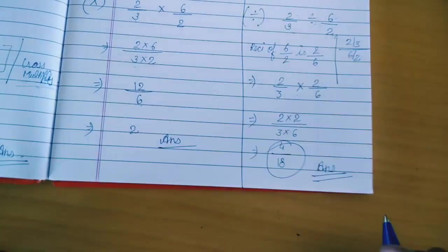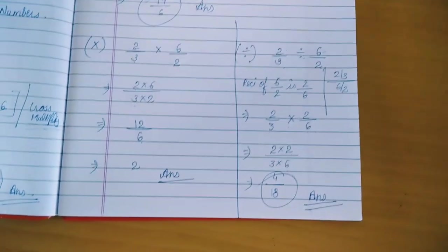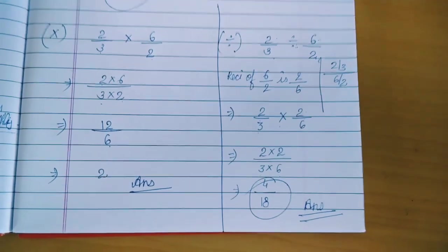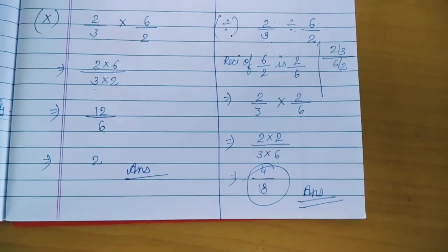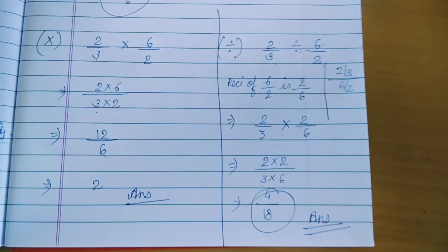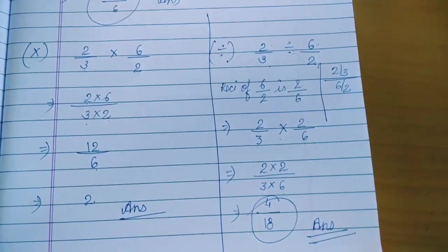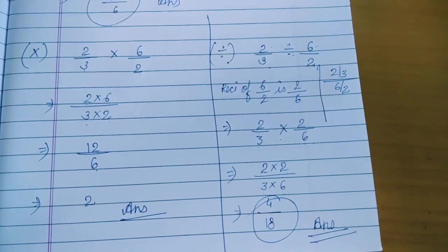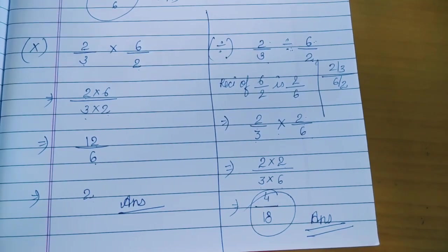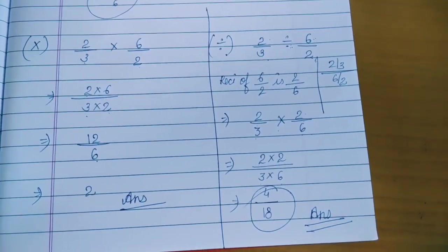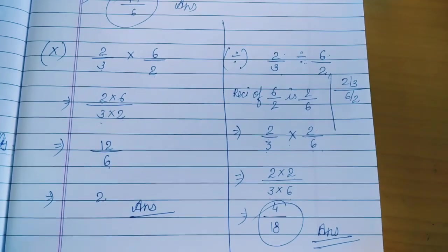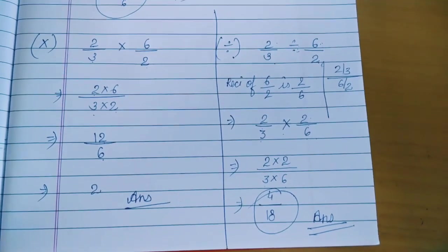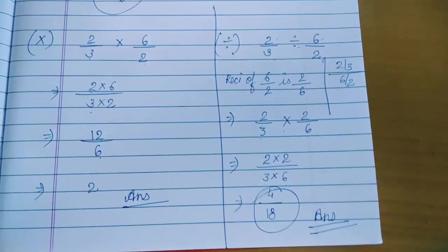So in this video we saw the definitions of natural numbers, whole numbers, integers, and rational numbers, and we also saw the four operations on rational numbers: addition, subtraction, multiplication, and division. I hope you understood. If you have any problem you can ask me. In the next video we will meet with the properties of whole numbers, integers, and rational numbers. Thank you.